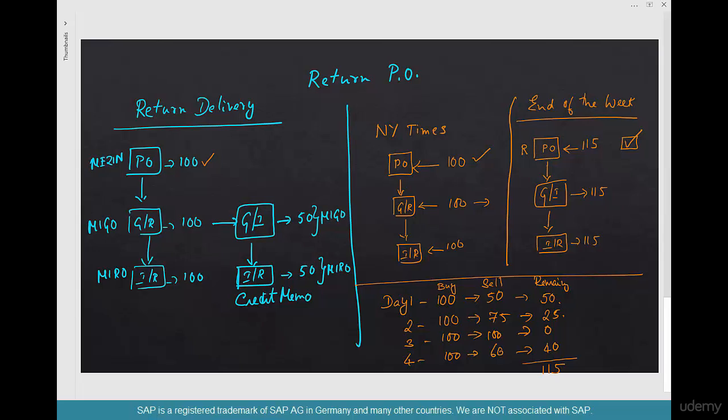Everything else remains the same. You just mark that line item as return PO, and then subsequent processes automatically adjust themselves to be a goods issue, for example, as opposed to a goods receipt, or a credit memo as opposed to an invoice receipt. So, let's do this in action. First thing we're going to do is create this cycle, and the second thing we're going to do is create this cycle.